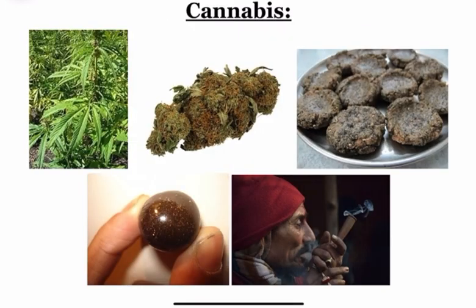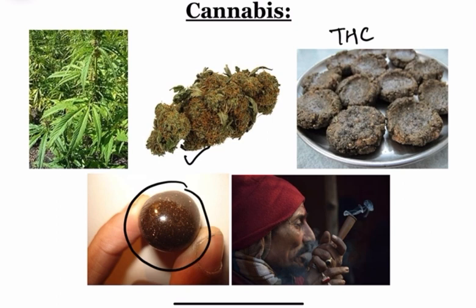Next is Cannabis, also called as Hash, Grass, Rope, Pot, Weed, etc. The active principle is THC, i.e. Tetrahydrocannabinol. We have various preparations — from the dried flowers we can make reefers or joints. The most potent form is called Charas. We also have Bhang, which is made from dried leaves.